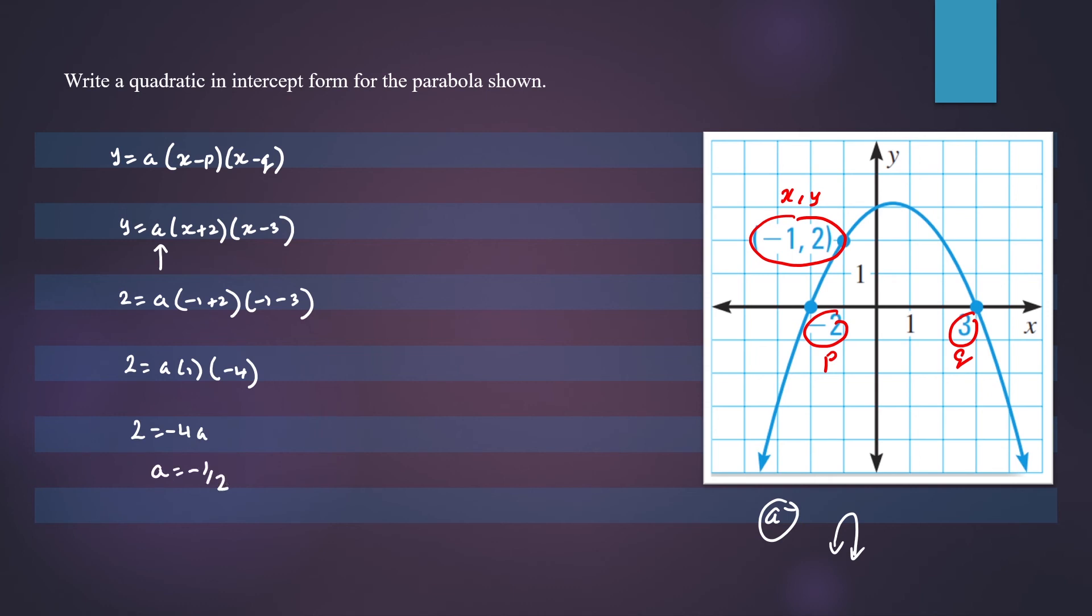And now we can write our final equation in intercept form. So we can write that as y equals a, and a we found was negative 1 half, times x plus 2, times x minus 3. So this is your final answer. Thanks for watching.